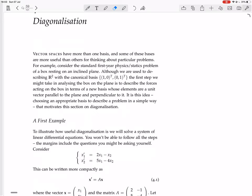Vector spaces have more than one basis, and some of these bases are more useful than others for thinking about particular problems. For example, consider the standard first-year physics-statics problem of a box resting on an inclined plane. Although we are used to describing R² with the canonical basis, the first step we might take in analyzing the box on the plane is to describe the forces acting on the box in terms of a new basis, whose elements are a unit vector parallel to the plane and a vector perpendicular to it. It is this idea, choosing an appropriate basis to describe a problem in a simple way, that motivates this section on diagonalization.